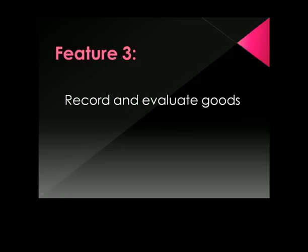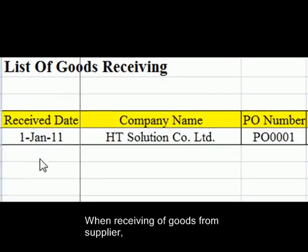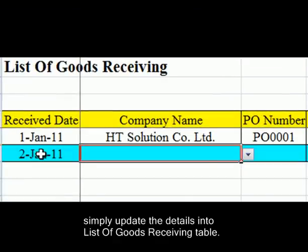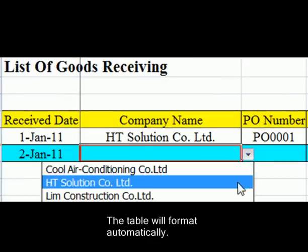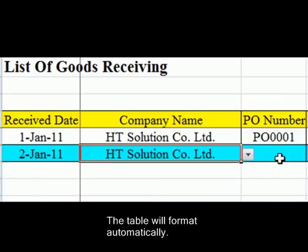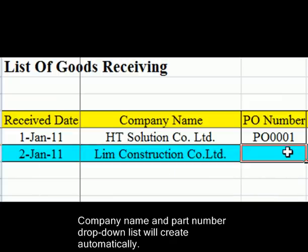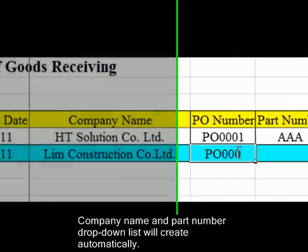Feature 3: Record and Evaluate Goods Receiving Easier. When receiving goods from a supplier, simply update the details into the List of Goods Receiving Table. The table will format automatically, and the company name and part number drop-down list will be created automatically.